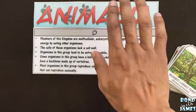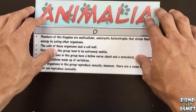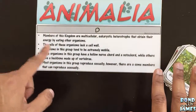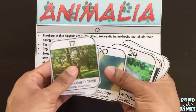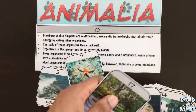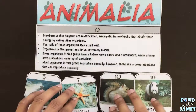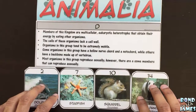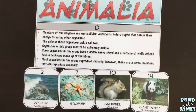Students find a header card, then find a descriptor card that has clues describing that particular kingdom. They go through the organism cards and place them where they best fit. There's an equal number of cards for the most part for each of the kingdoms that students need to go through to classify them.